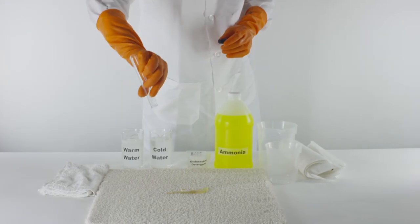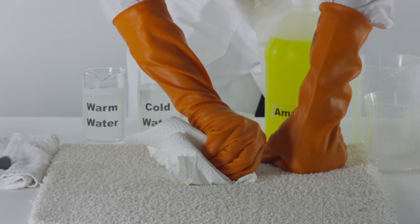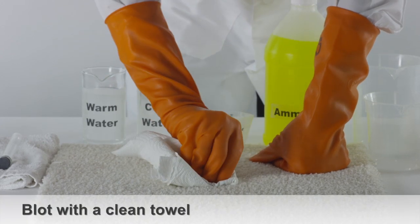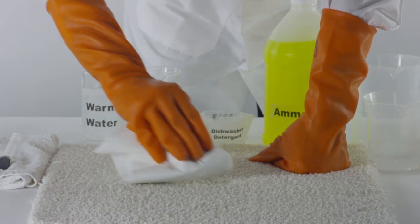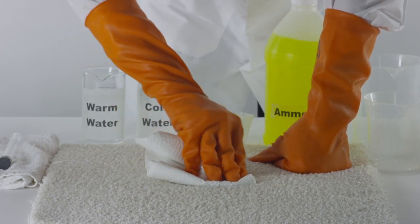How to get urine stains out of carpet. If the area is still wet, be sure to blot the urine stain with a clean towel. You can also use paper towels to help absorb any remaining urine.